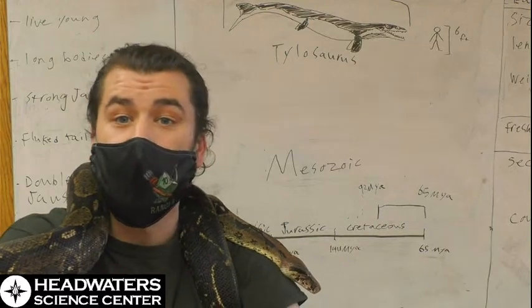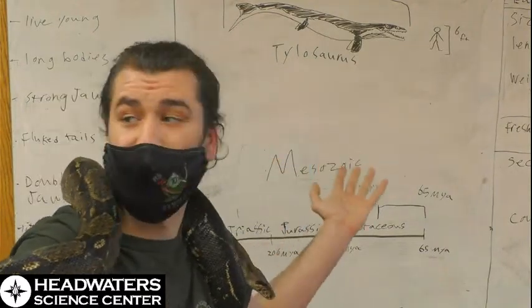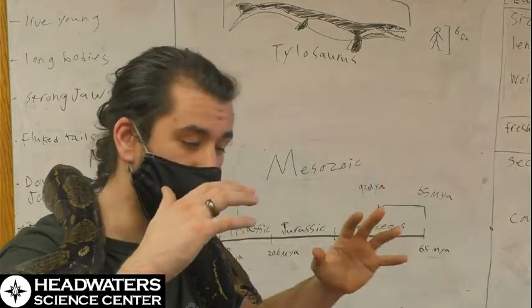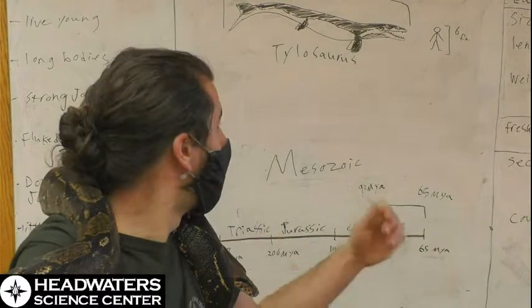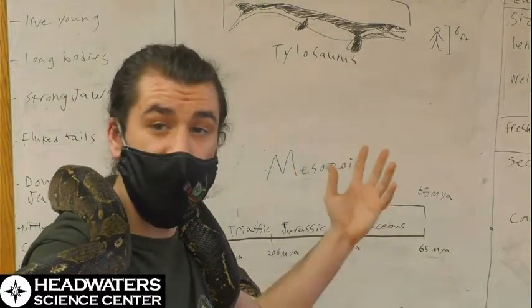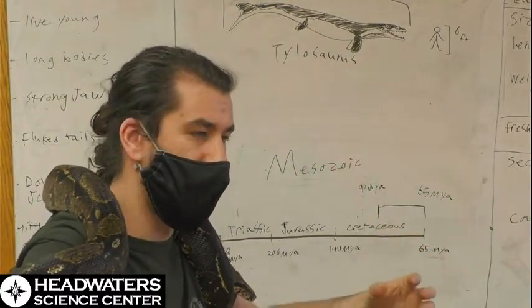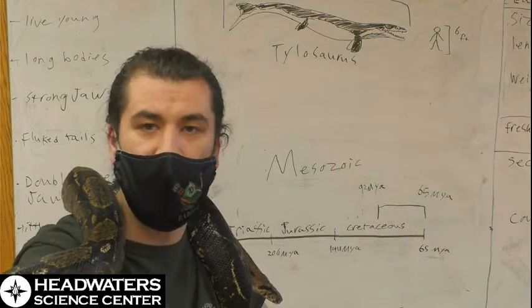The mosasaurs happened to be diversifying just around that time and were able to take advantage of those open opportunities in the ecosystem, leading to this really sudden radiation from very generalist animals to these animals where a lot of them had very specialized teeth.